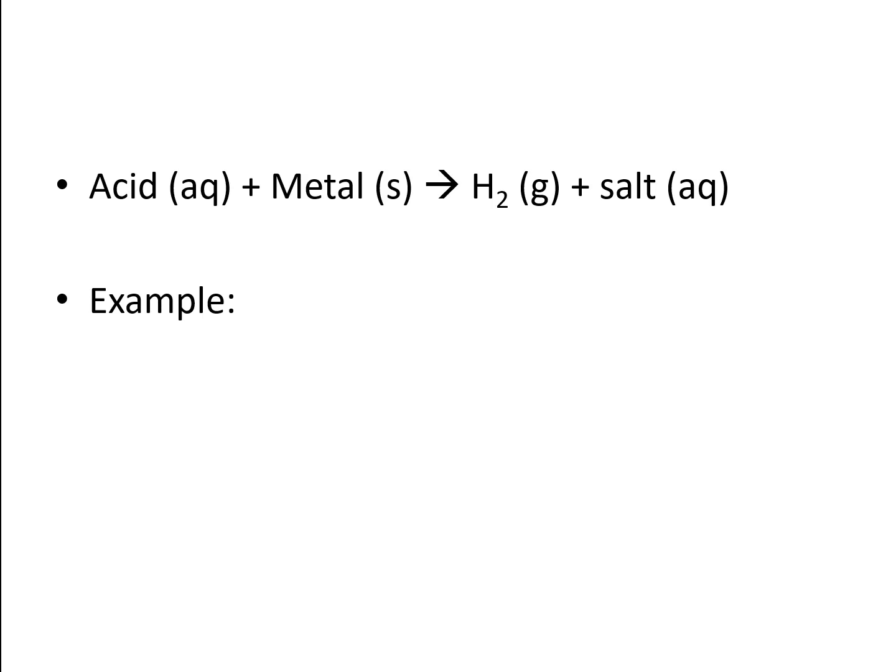So here's our first example. Here we have hydrochloric acid reacting with zinc, and it forms hydrogen gas and zinc chloride. Now there are two mistakes in this equation. One of them is that it isn't balanced. The other one is in how one of the formulas is written. I want you to take a moment and see if you can find the mistake before I do the correction.